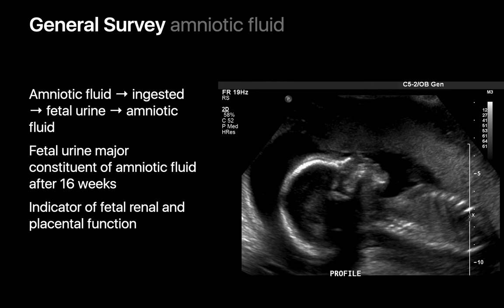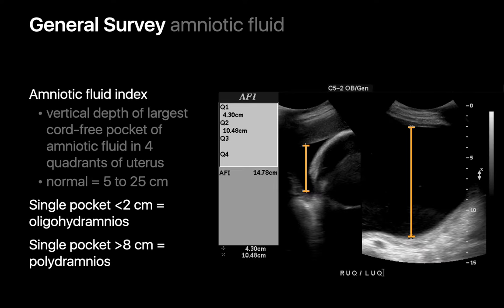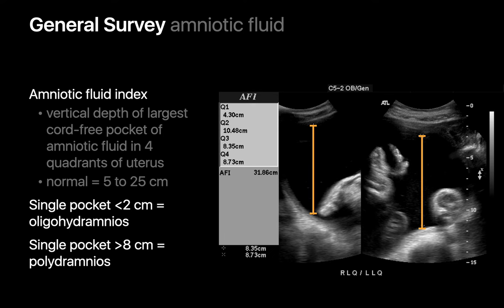An abnormally low or high amount of amniotic fluid can sometimes be a sign of an underlying problem. We quantify the amount using the Amniotic Fluid Index, or AFI — the sum of the deepest vertical pocket of amniotic fluid, excluding fetal parts and umbilical cord, in each of the four quadrants of the uterus. We call oligohydramnios if the AFI is under 5 centimeters or any single pocket is less than 2 centimeters deep, and polyhydramnios if the AFI is over 25 centimeters or any single pocket is over 8 centimeters deep.